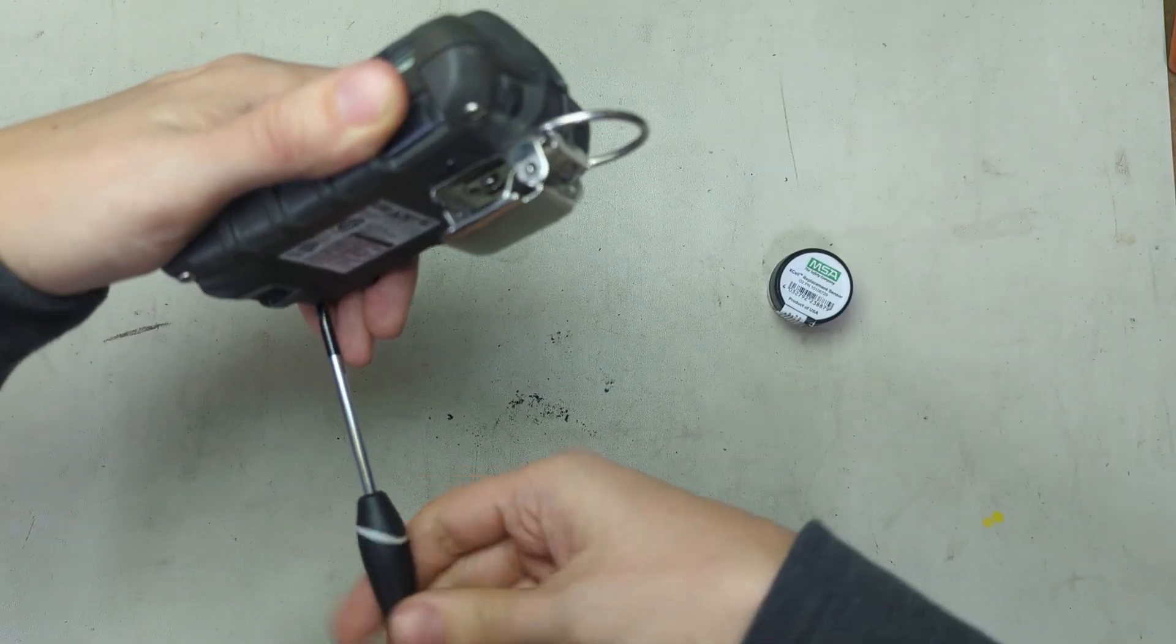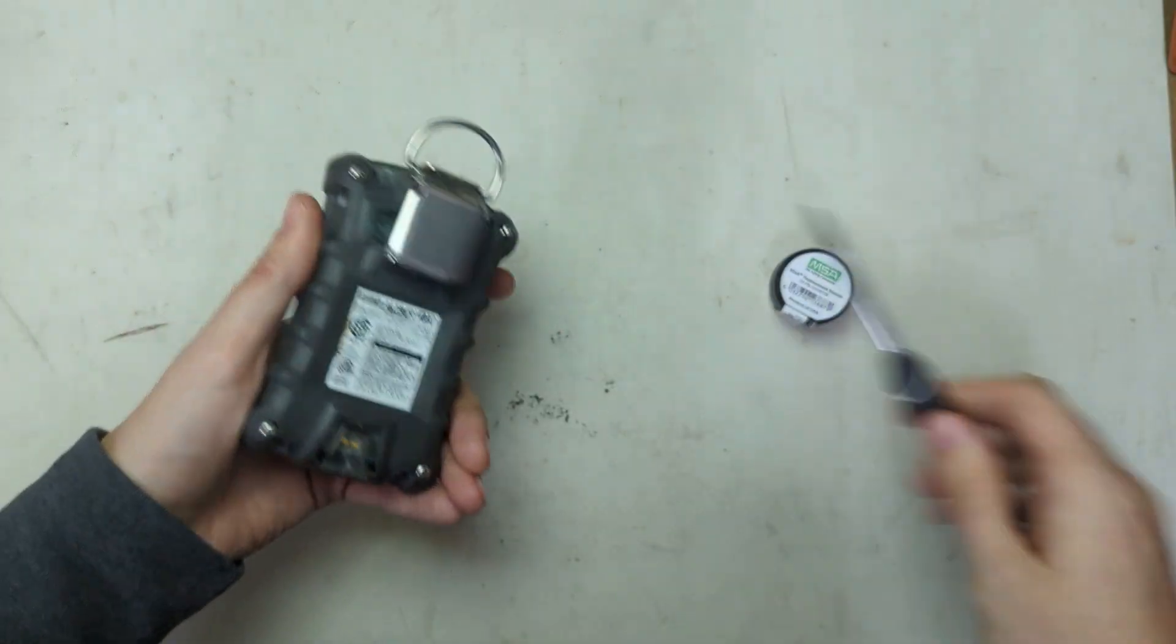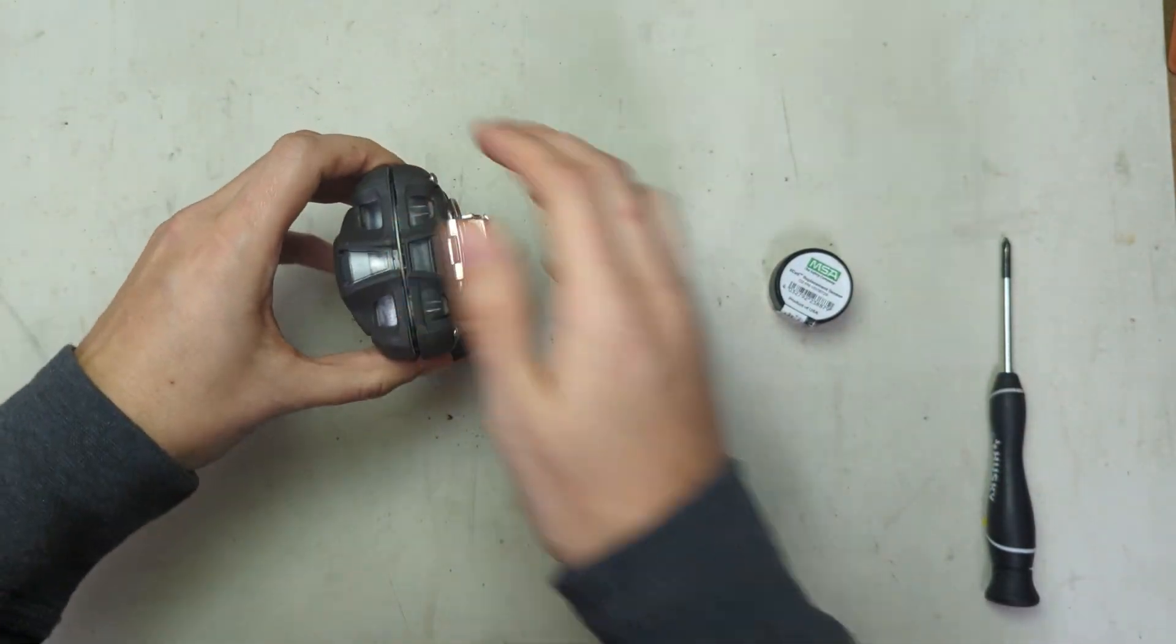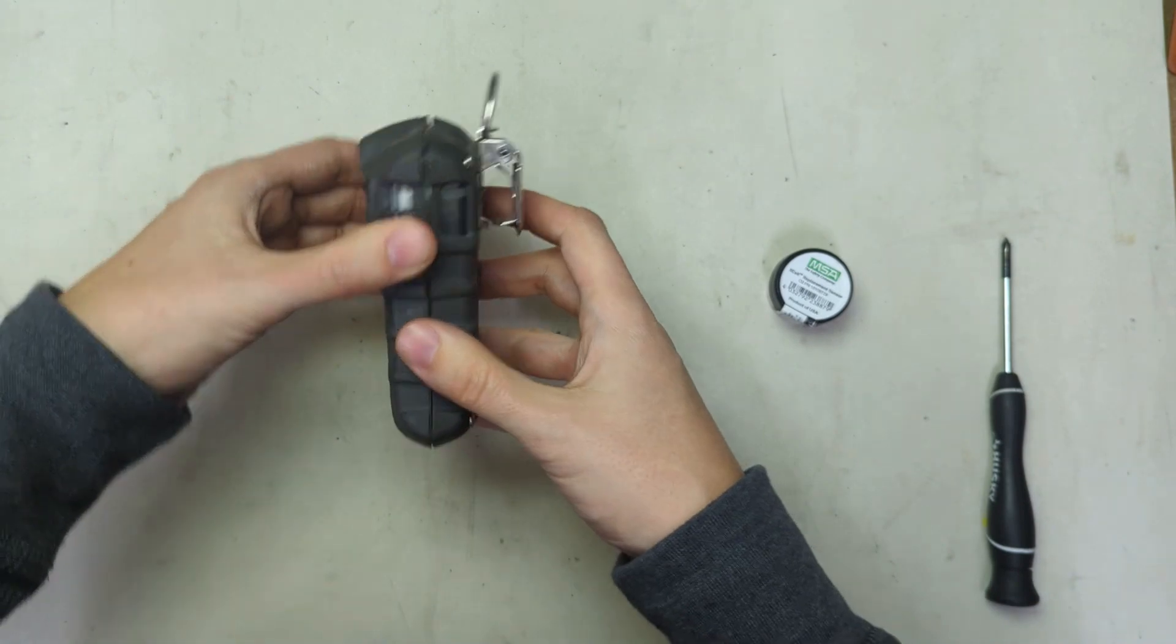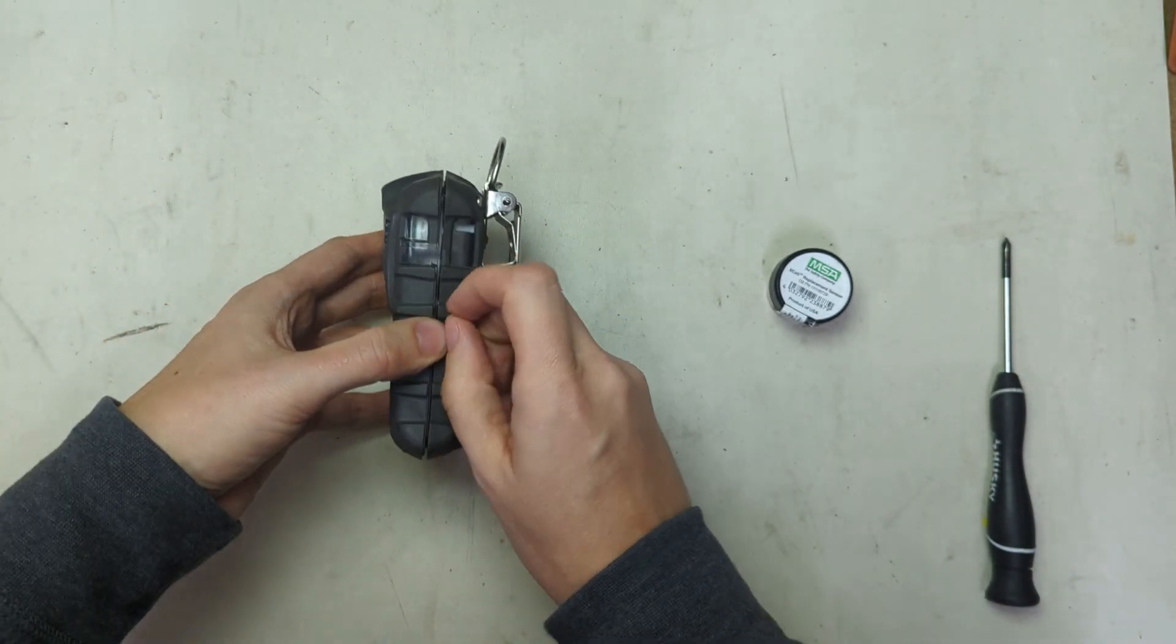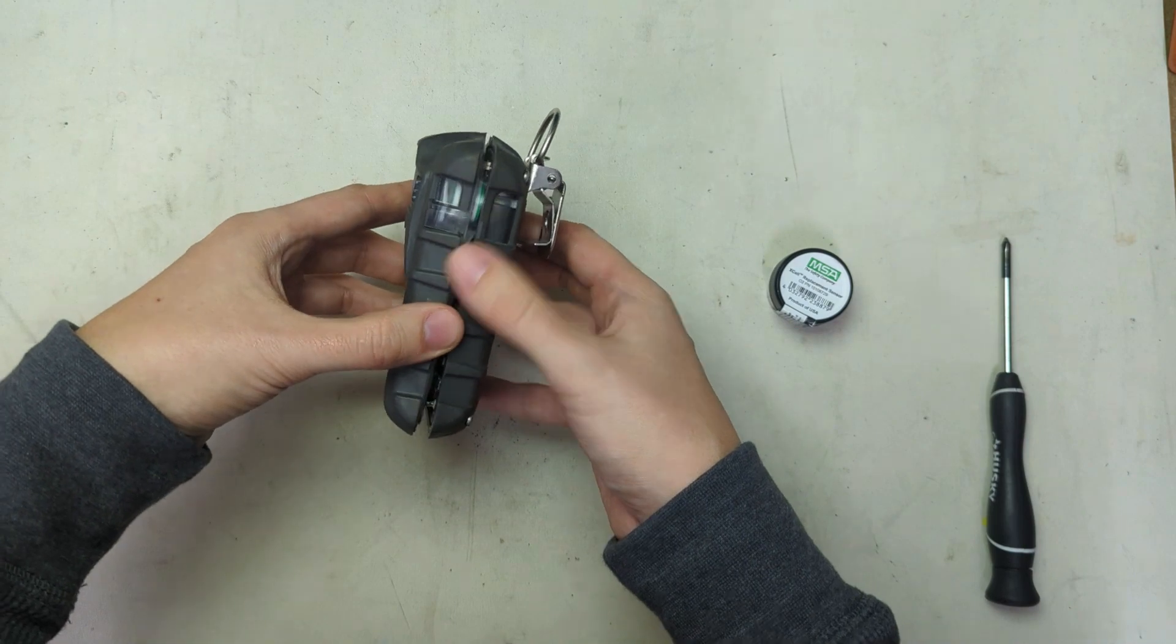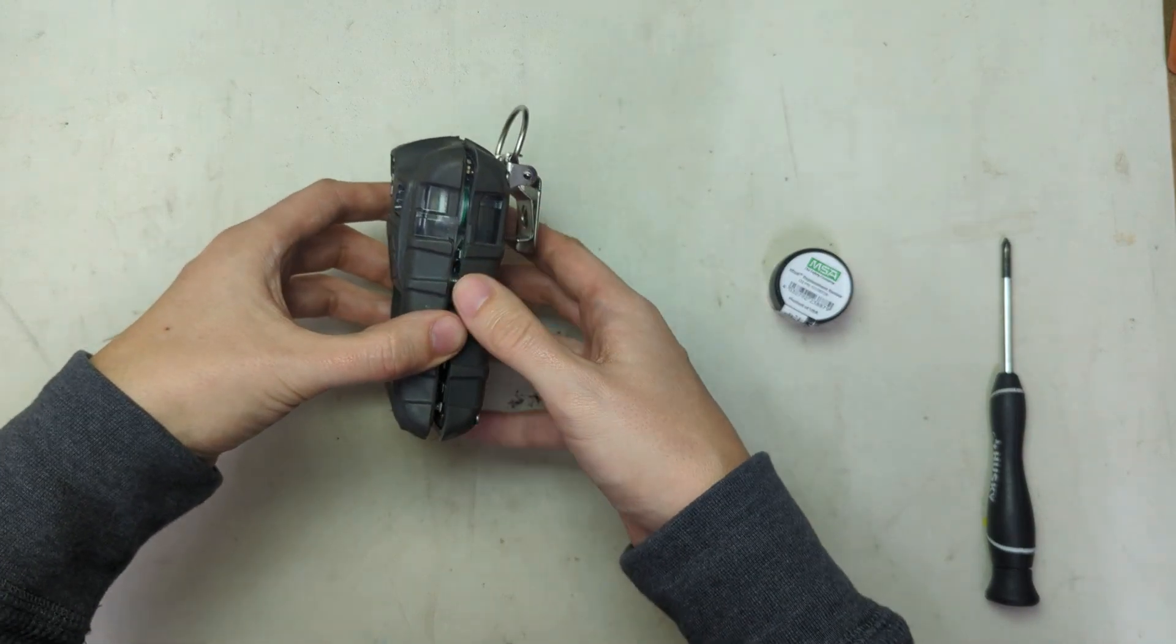Alright, we've got the four screws out of the back here, you can leave this one on the clip here, and you just pull it apart. Sometimes this will stick, so if you need to, just come in from the side with a really small flathead and crack it apart, but just make sure you don't bust this plastic inside, so don't use too much force.